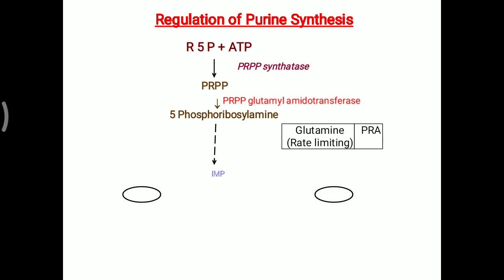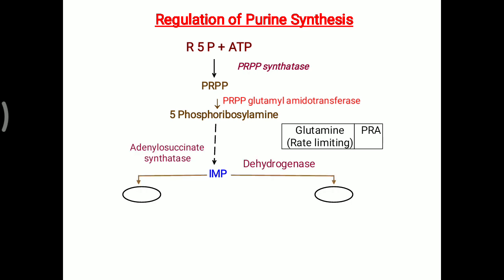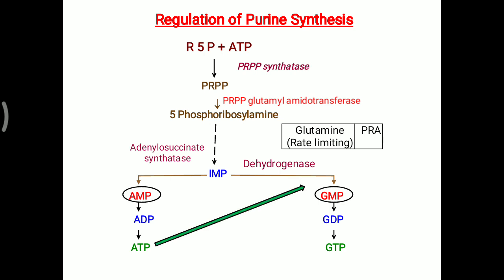After that, inosine monophosphate (IMP), the first purine ring, is synthesized. This inosine monophosphate is then converted into AMP and GMP with the help of synthetase and dehydrogenase enzymes. AMP and GMP are converted into ADP and GDP, and respectively form ATP and GTP. Interestingly, ATP is needed for GMP formation while GTP is needed for AMP formation.